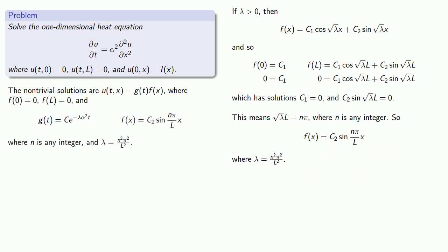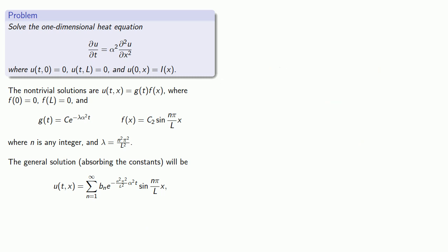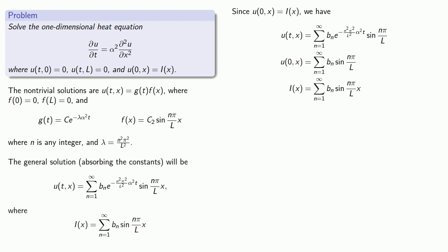And so the general solution, absorbing the constants, is going to be... So what about those constants? Again, we can rely on our boundary value. Since u of 0 x is i of x, our initial temperature distribution, we have... And so our initial temperature distribution gives us a trigonometric series.